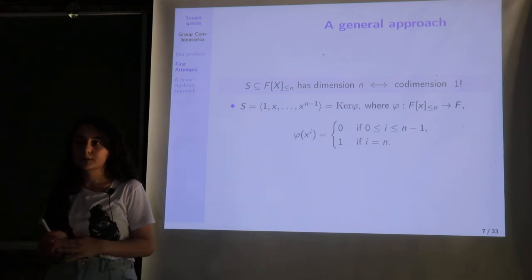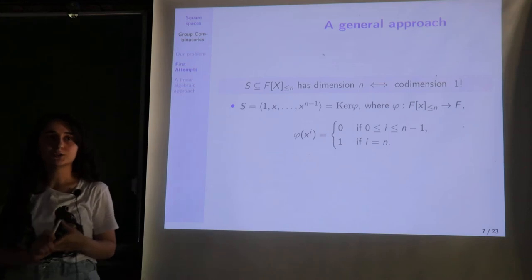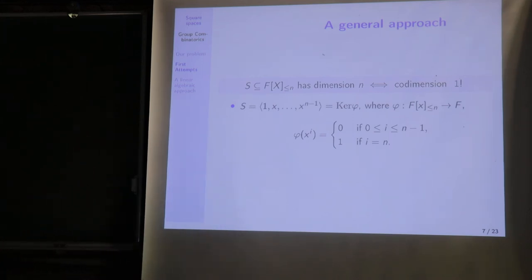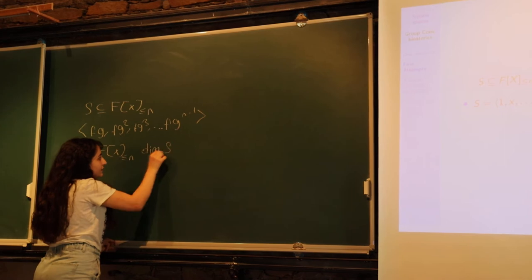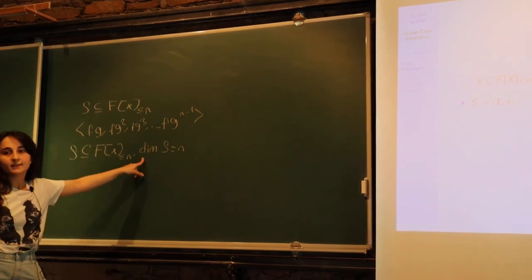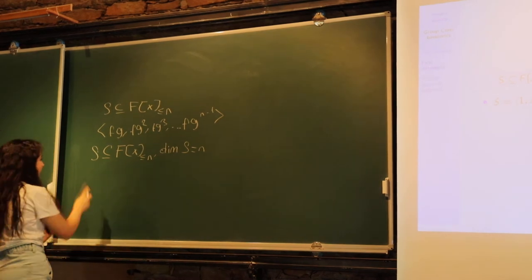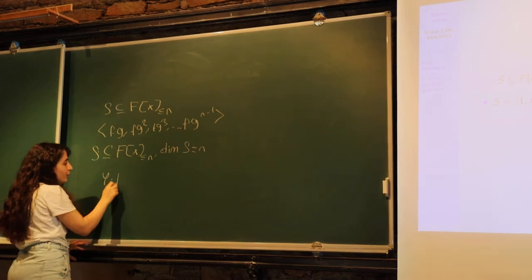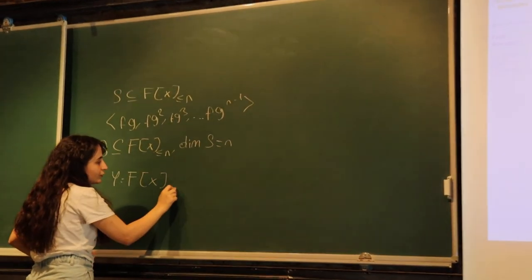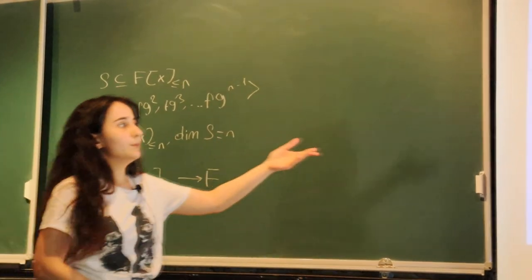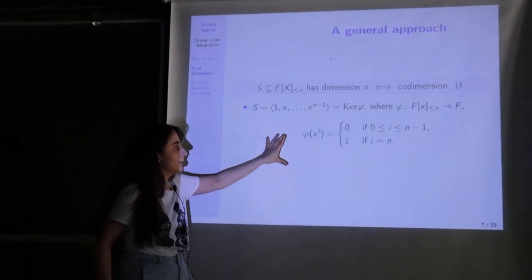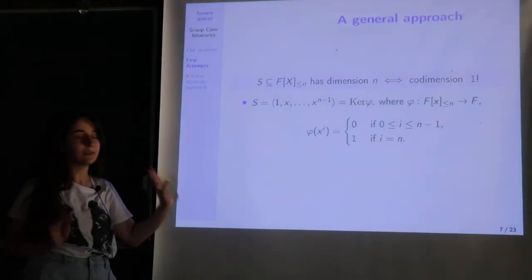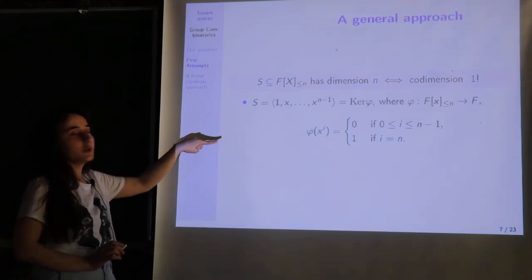Let me continue with our general approach. If we consider a subspace S of F[x]≤n with dimension n, then the co-dimension of S is equal to 1. Therefore, we can see S as the kernel of a linear functional φ from F[x]≤n to F. For example, S = {1, x, …, x^(n−1)}: if we let φ be the map that sends all monomials to 0 except x^n, which it sends to 1, then S is the kernel of this map.